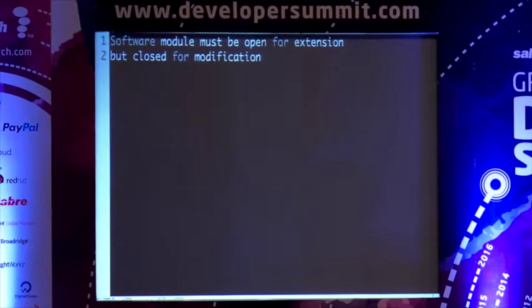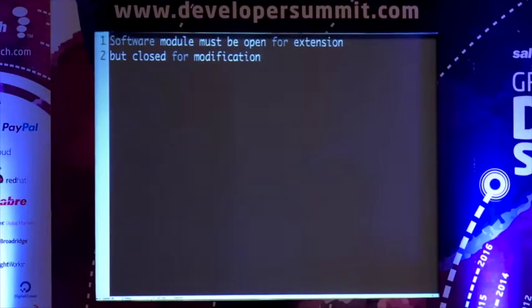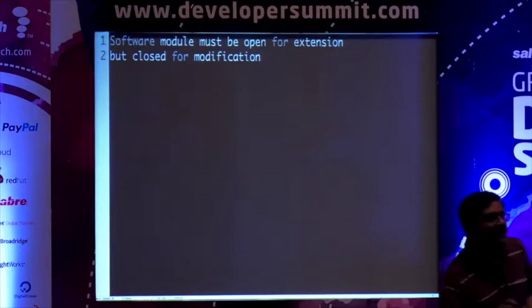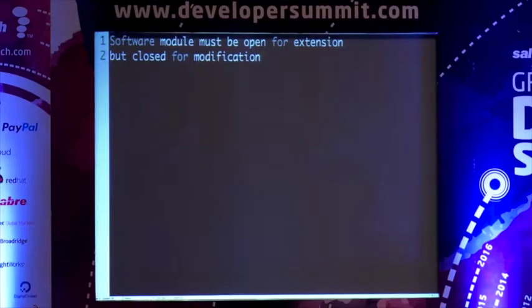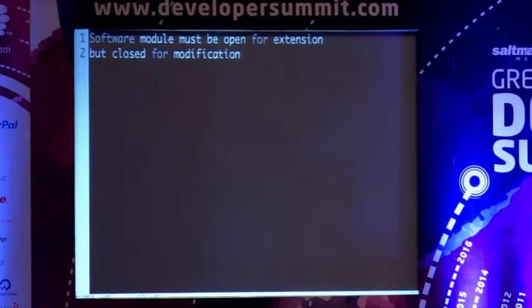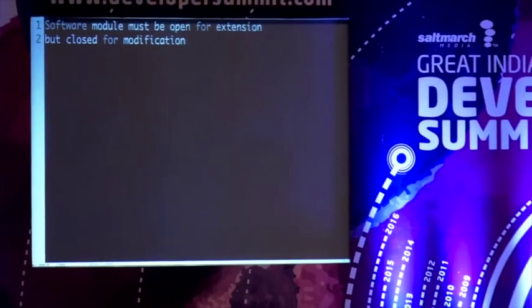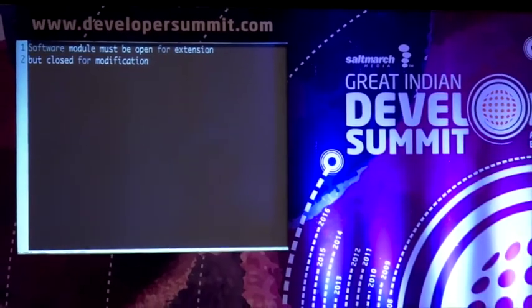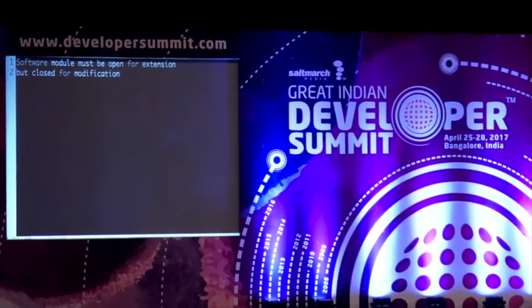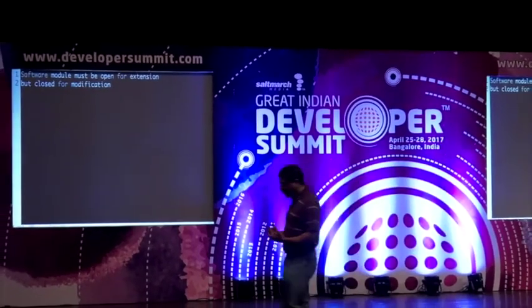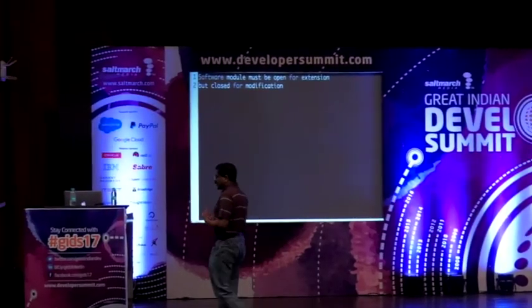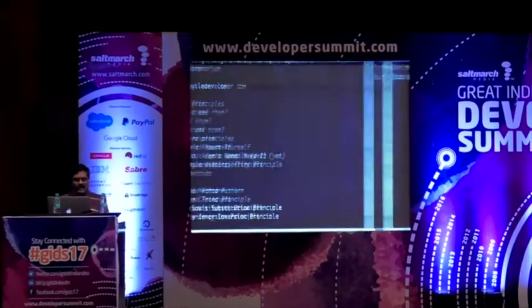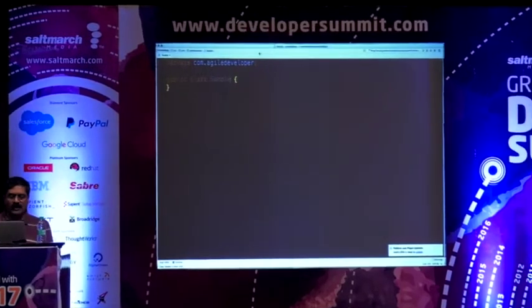How could you change a piece of code but not actually change it? The whole idea is we want to extend software. Any project that's relevant has to change over time. But you don't want to change the software by changing a lot of things — you want to change fewer things. You want to minimize the times it would change to provide extensibility. Let's understand this with an example.